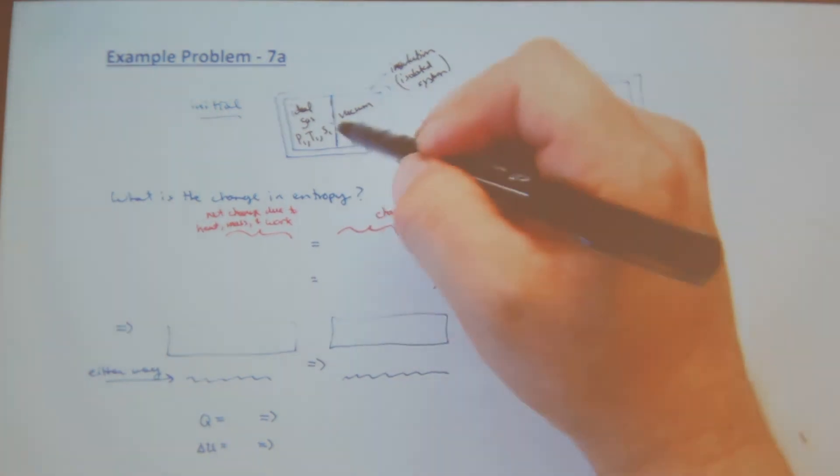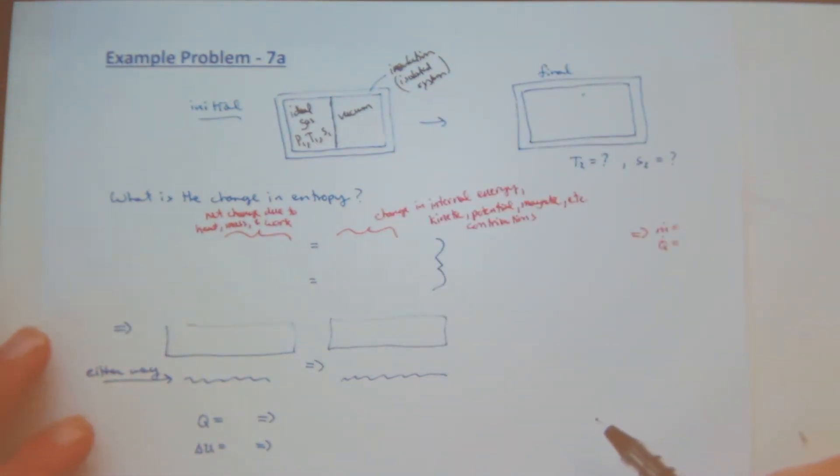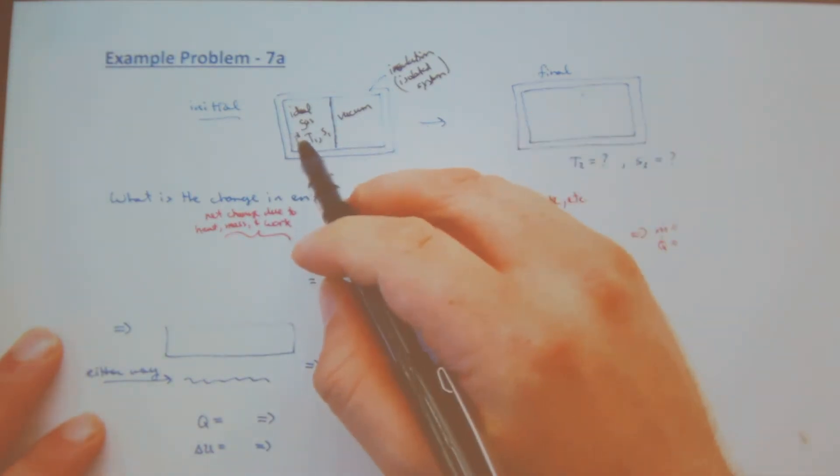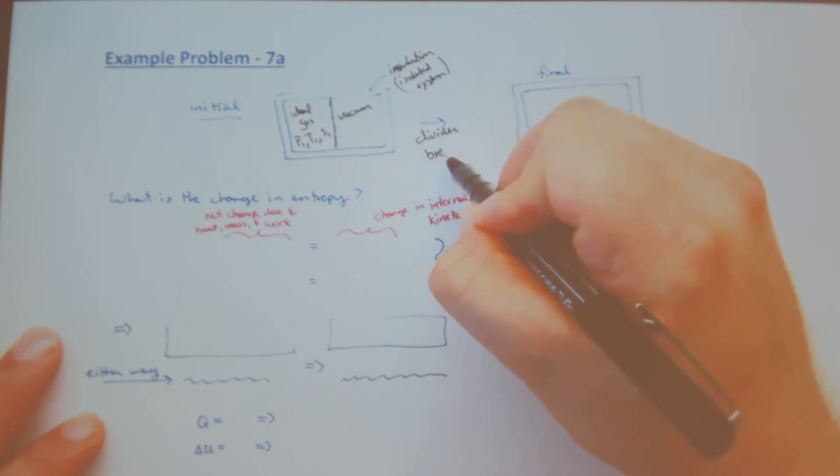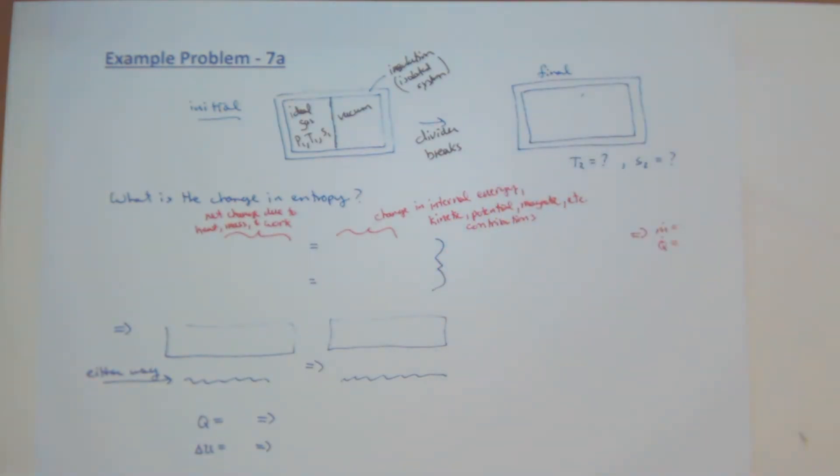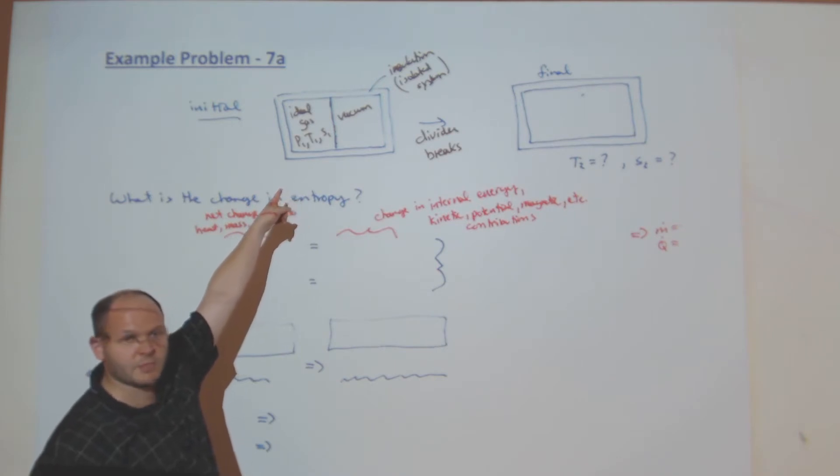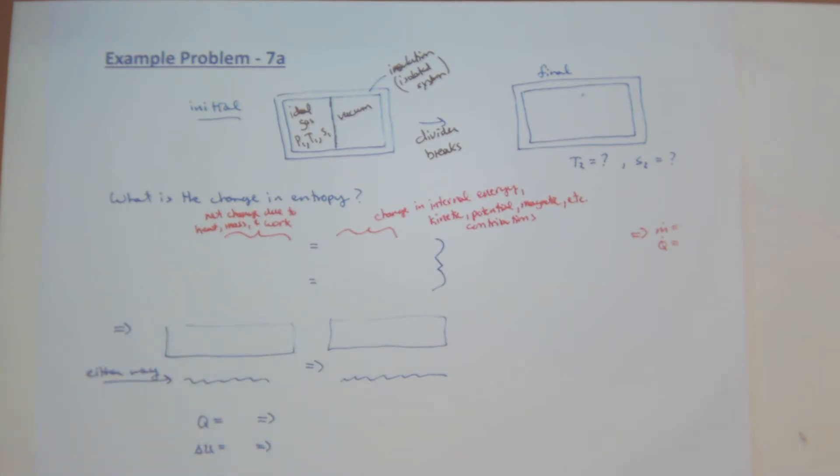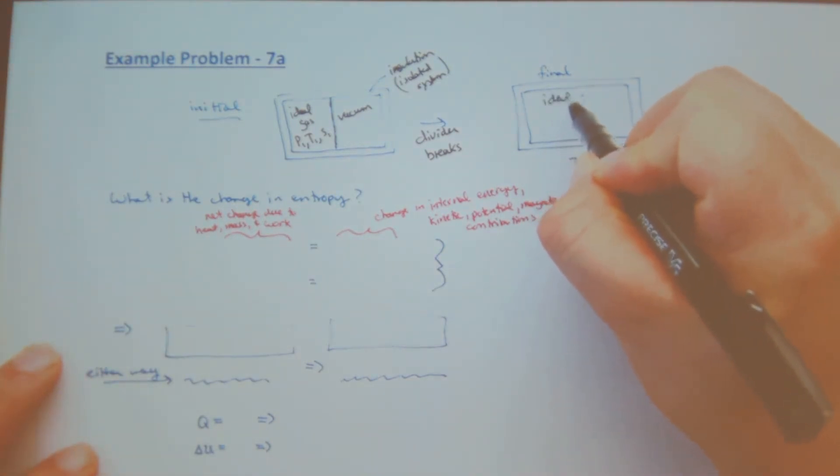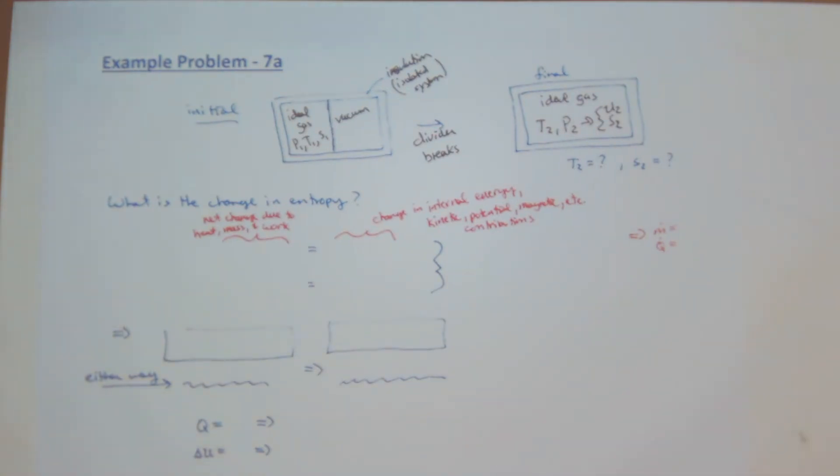This is my initial state. My final state - what happens in between my initial and final is the divider breaks. Act of God, it breaks. Spontaneous rupture of the membrane. Now my gas fills the whole container. So now I have an ideal gas at some temperature 2, P2, and of course I have some U2, S2, H2 likewise.